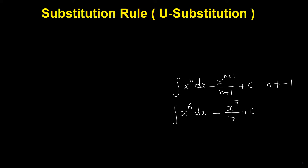We could find these integrals simply with the power rule because it completely fits. Now look at this integral: the integral of 3x² times (x³ + 1) all to the power of 6 dx. We cannot find this integral right away with the integral formulas because it doesn't fit any formula, so we have to find a way to change it to a simpler integral.